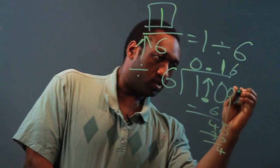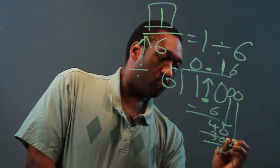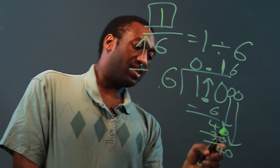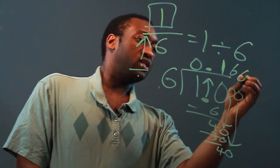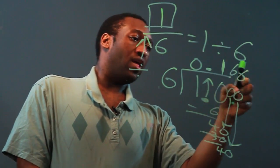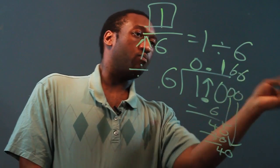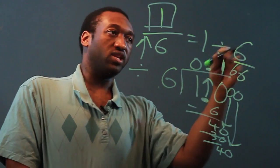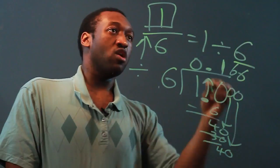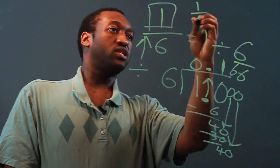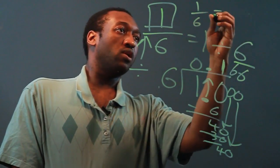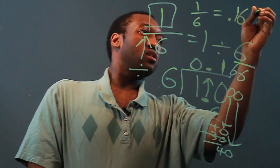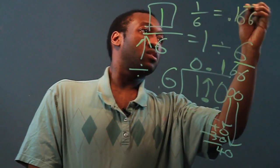That's four also. If we bring down another zero, we get the same forty. So this six will actually keep going and repeat. So we'll write the line over it to indicate that. So one-sixth as a decimal is .166 repeating.